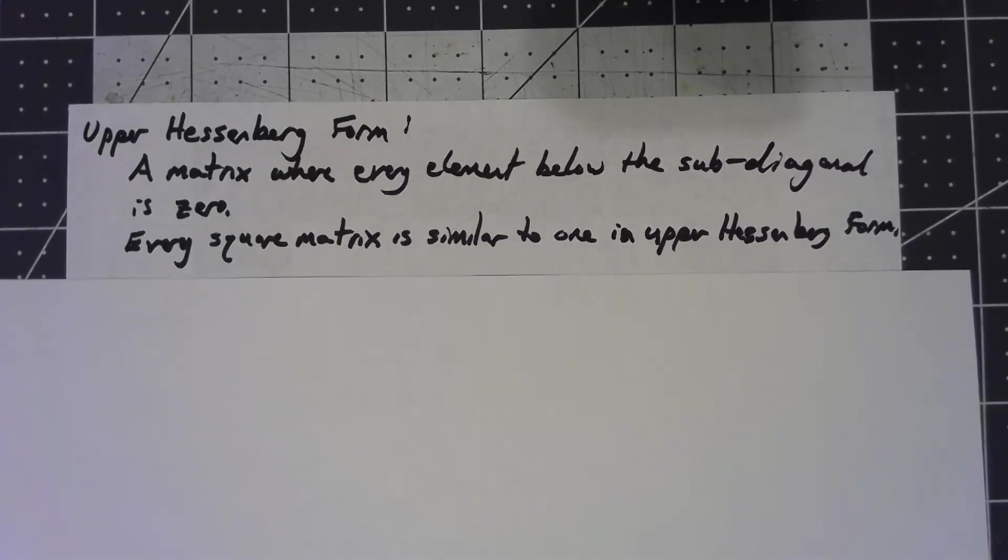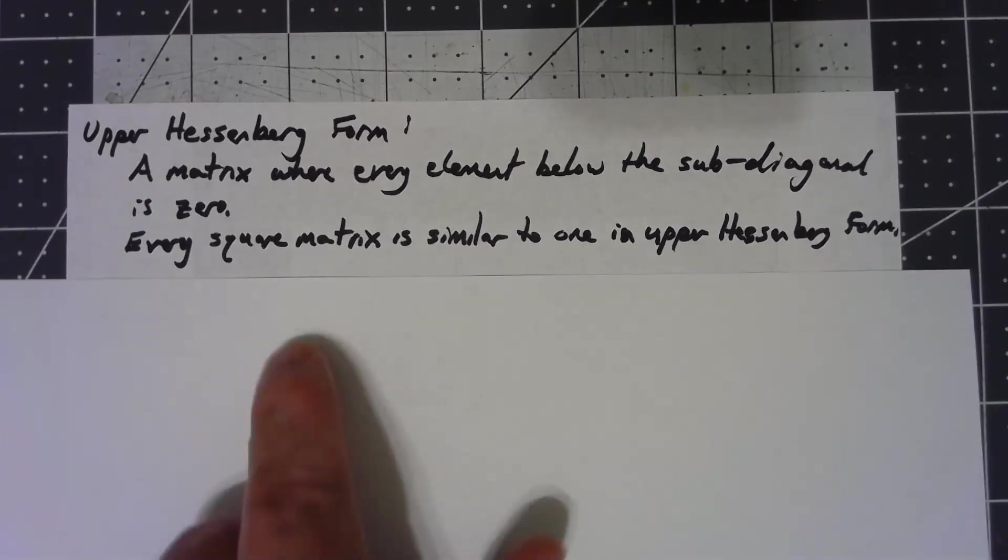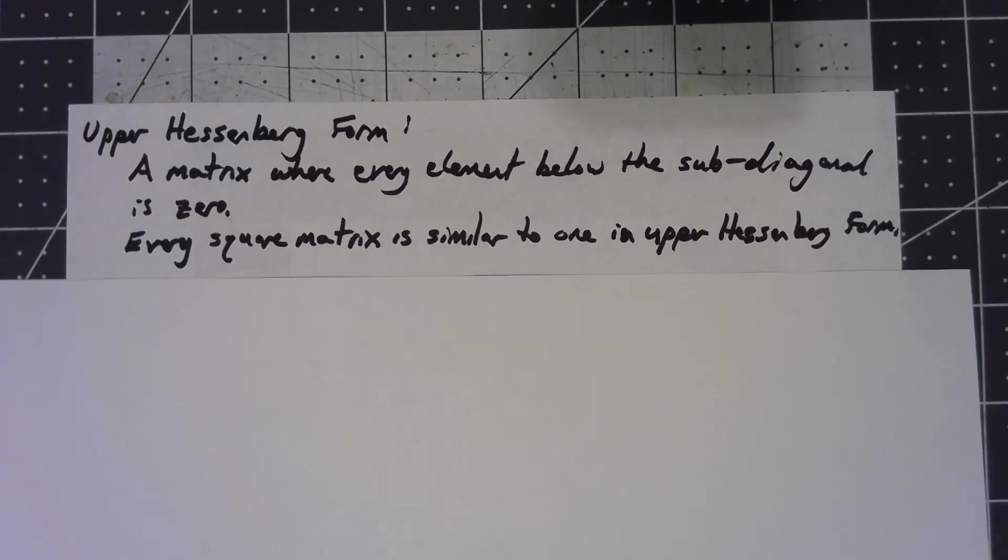And what that is is something we call upper Hessenberg form. The basic idea is that we've got something that's almost upper triangular. The elements below the sub-diagonal could also be non-zero, but everything below that is zero. This is a slightly weaker statement than the Schur form that we talked about before, whereas in the Schur form we had two by two blocks.